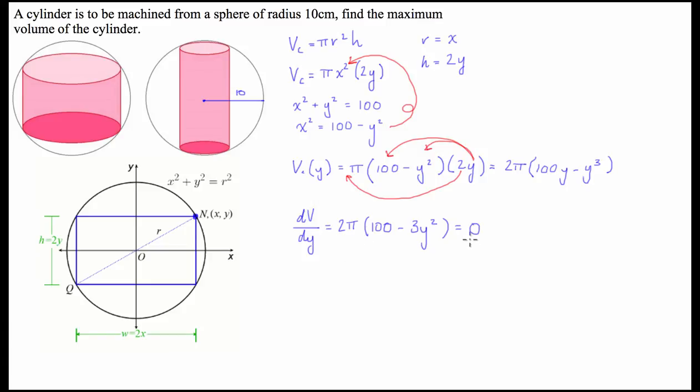What I'm then going to do is I'm just going to solve it for y. So, what I'm going to do is I'm going to divide both sides by 2pi. And obviously, the 2pi cancels. 0 divided by 2pi is still 0. And we're left with 100 minus 3y squared.